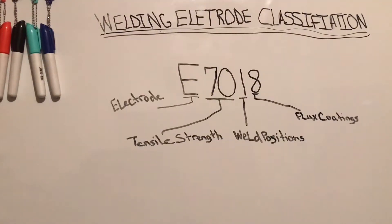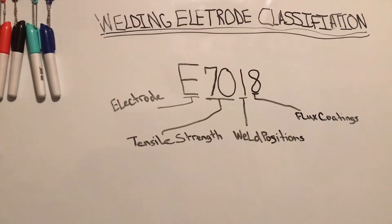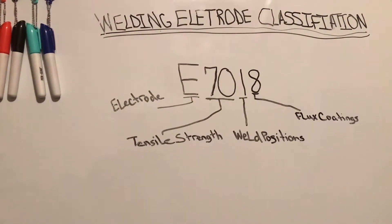This here is the welding electrode classification system created by the AWS, or American Welding Society. The E stands for electrode. Your first two digits on a four-digit, or the first three digits in a five-digit classification, are your tensile strength. The next to last number is the positions the welding electrode can be used in. One denotes it can be used in all positions, two denotes it can only be used in flat and horizontal. And then your last digit is your flux coating composition.